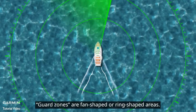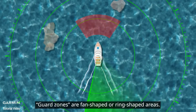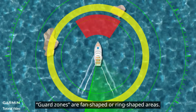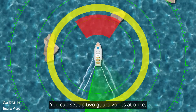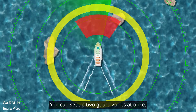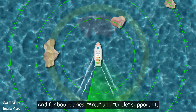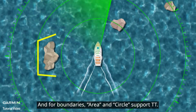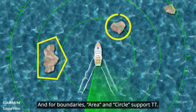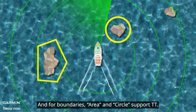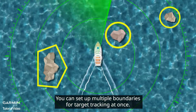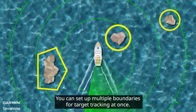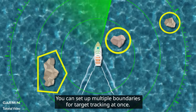Guard zones are fan-shaped or ring-shaped areas, and you can set up two guard zones at once. For boundaries, area and circle types support TT, and you can set up multiple boundaries for target tracking at once.